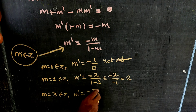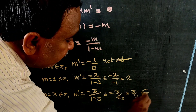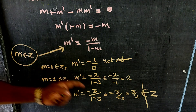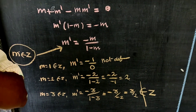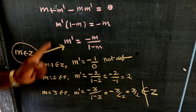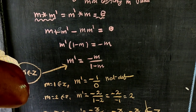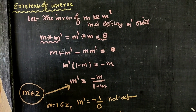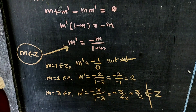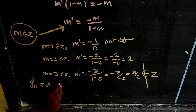For example, when M equals 3, M dash equals 3 divided by (1 minus 3), which is 3 divided by minus 2, equal to minus 3 by 2. Since minus 3 by 2 does not belong to Z, the inverse property does not exist for M star N equals M plus N minus MN on Z.